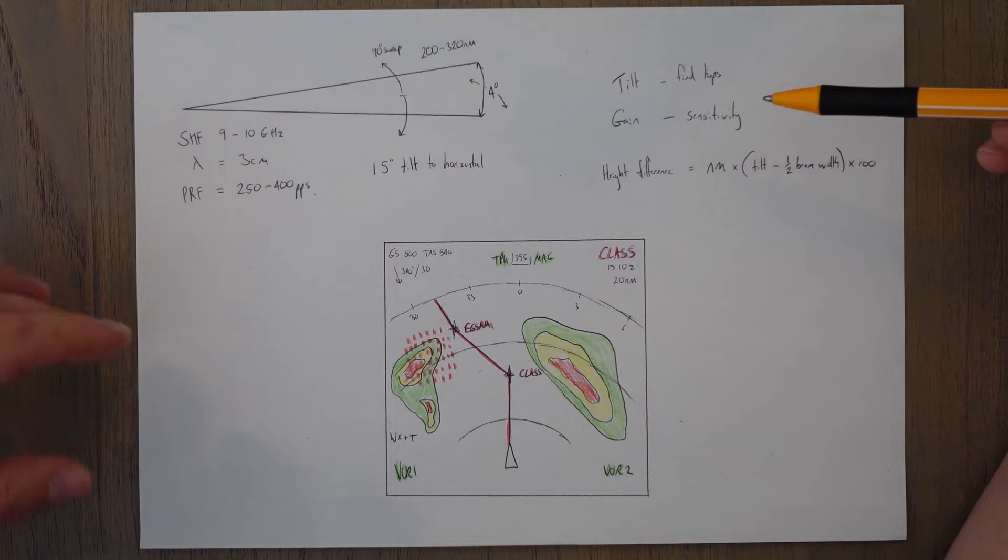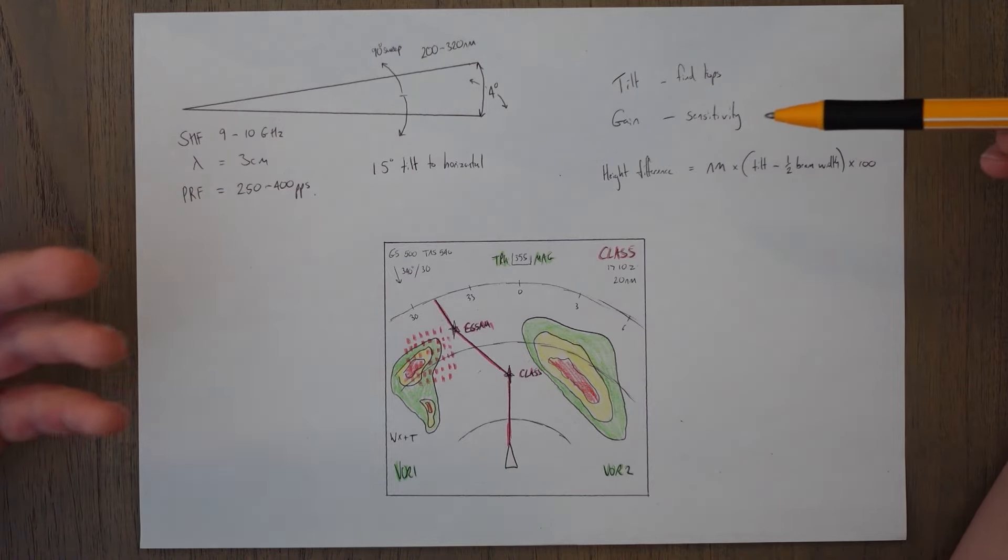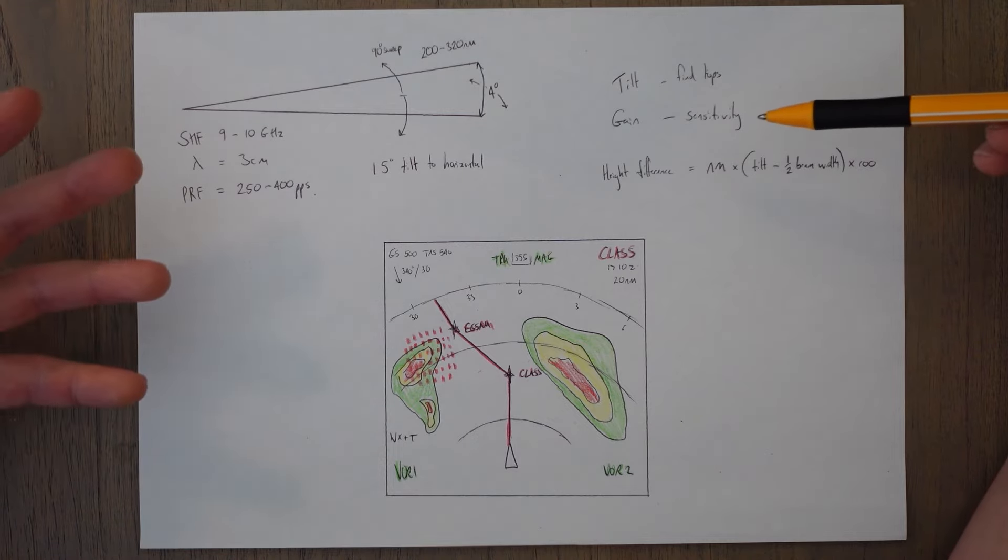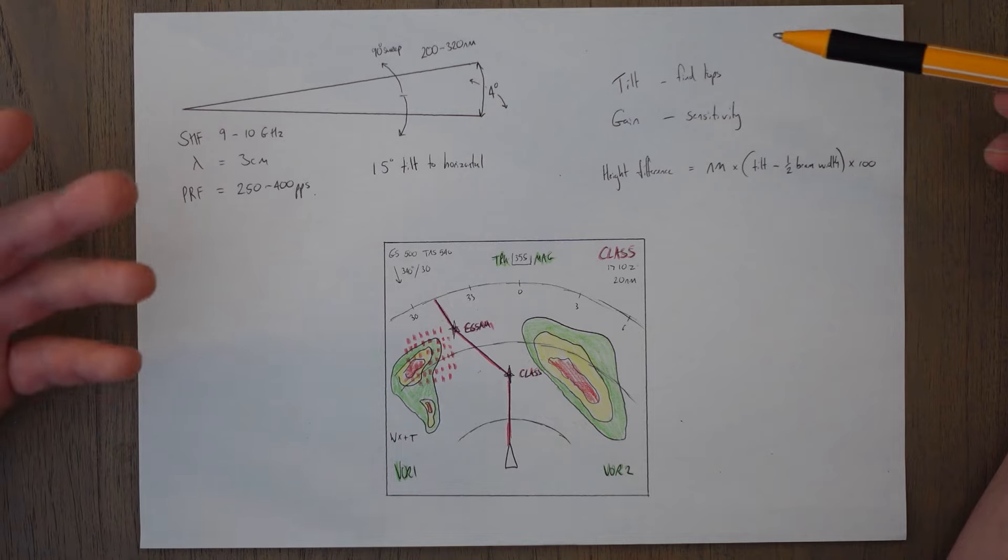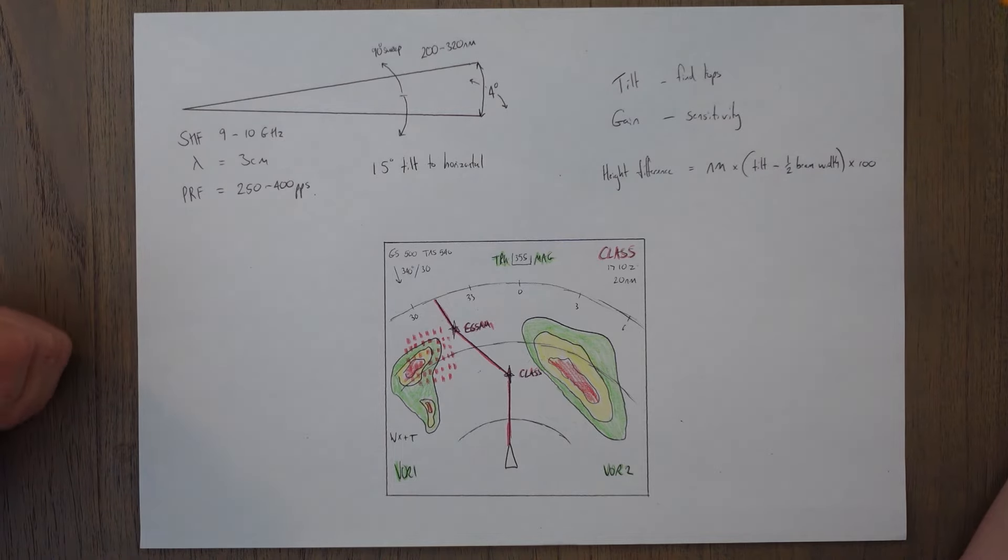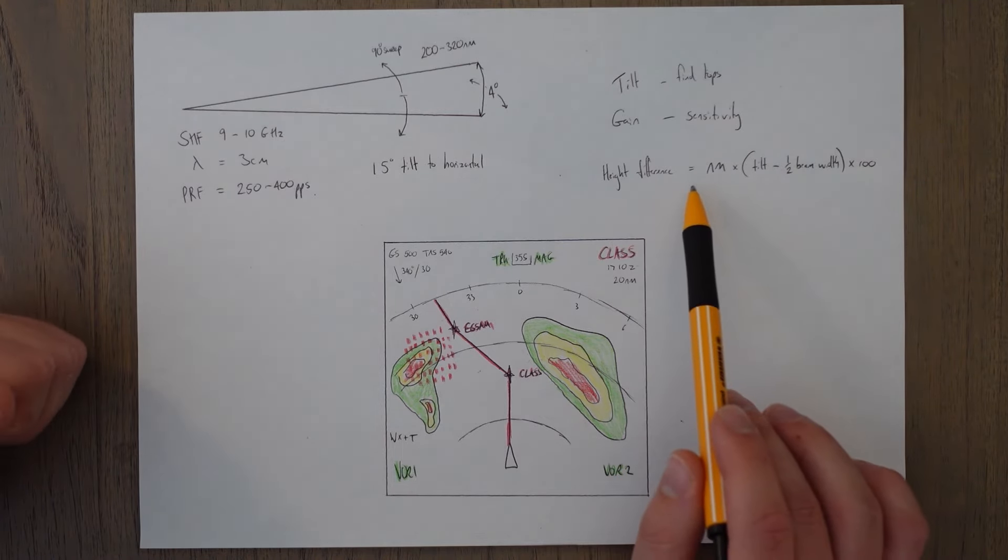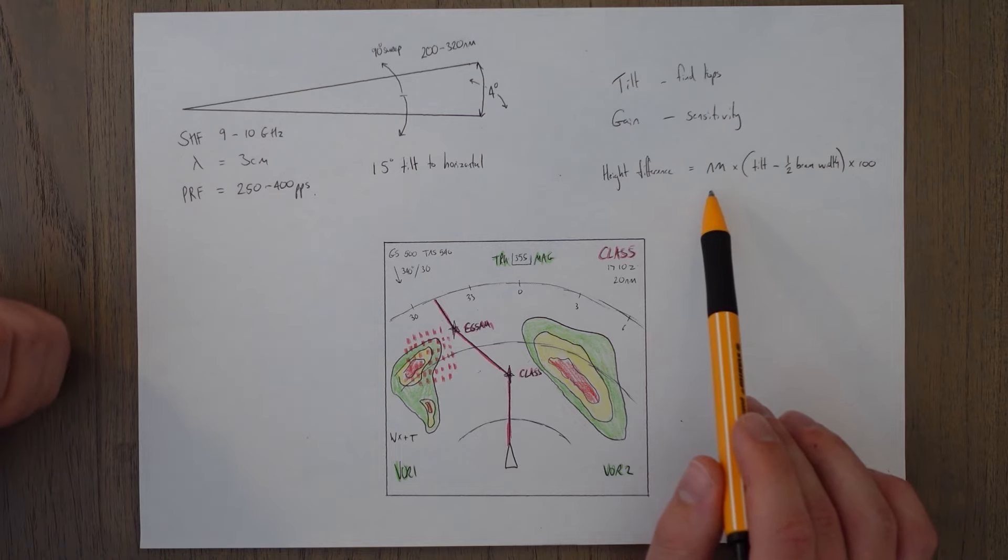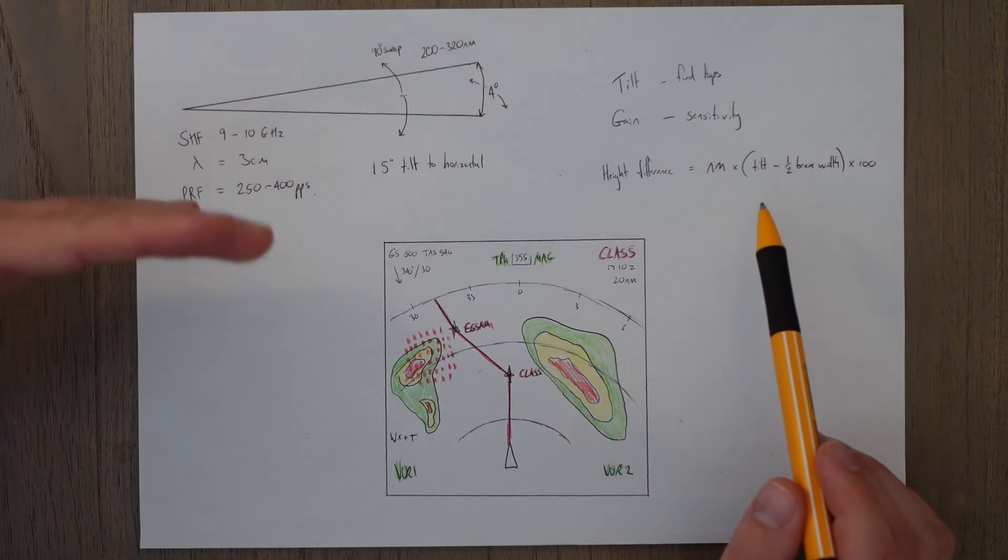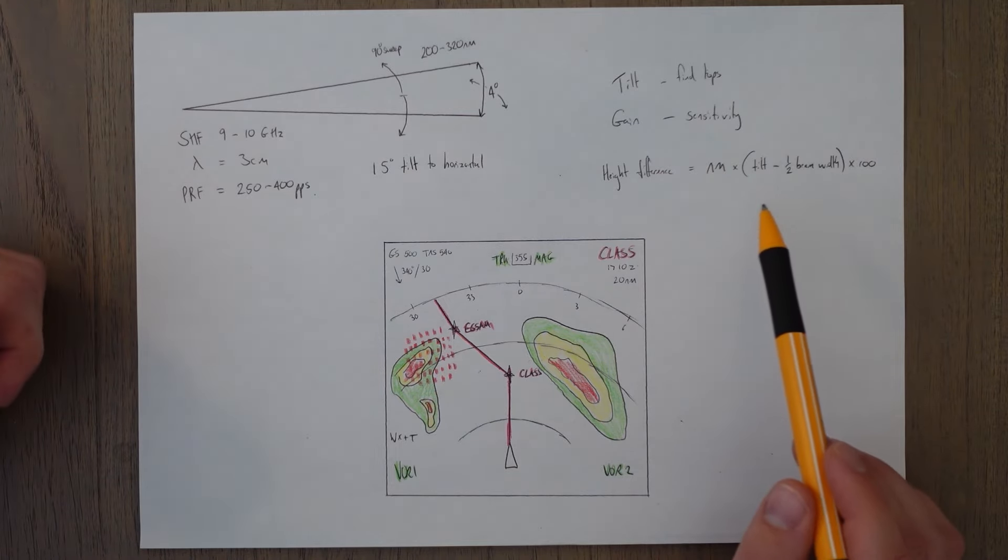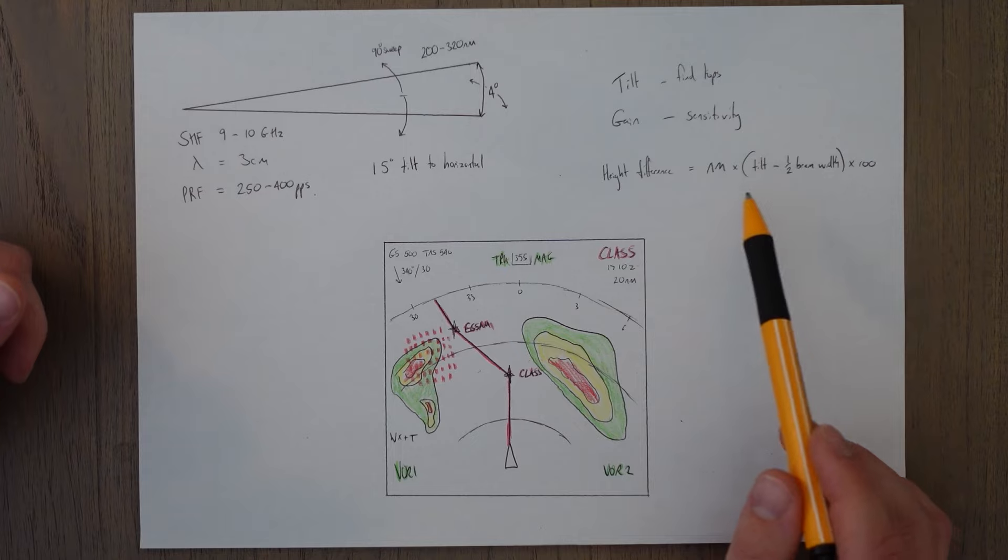Gain adjusts the sensitivity in order to detect the areas which are most problematic and that we definitely want to avoid versus areas that are maybe painting a bit over enthusiastically and aren't actually as bad as they seem. And tilt is used to find the height of these areas of intense precipitation or the cloud tops. We can use this formula: it's the nautical miles times tilt minus half the beam width times 100 to find out an estimate of how far above or below the tops or the areas of intense precipitation are.